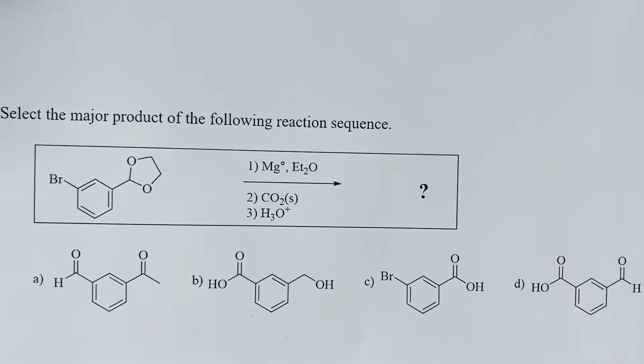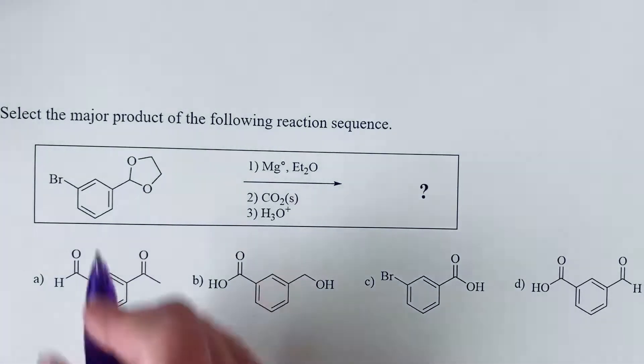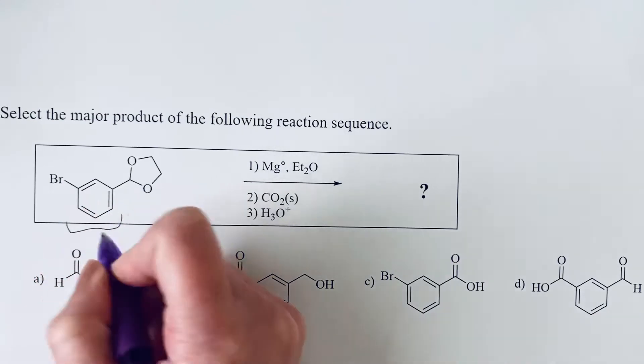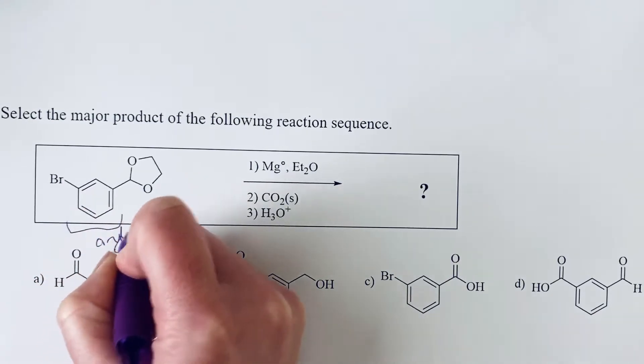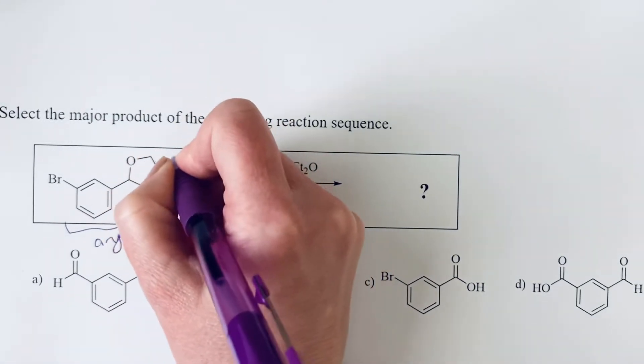Select the major product of the following reaction sequence. So we see in our starting material that we have an aryl bromide and we've also got an acetal.